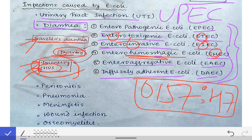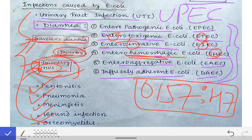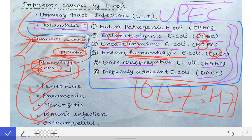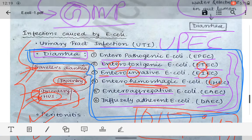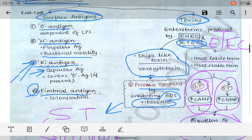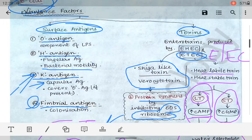E. coli can also cause peritonitis, pneumonia, meningitis — it is a very important cause of meningitis — wound infection, and osteomyelitis. These are all the infections caused by E. coli. However, since we are discussing this topic in the gastrointestinal infection portion, we will concentrate more on the diarrheogenic E. coli — the six pathotypes. That's all for the virulence factors and infections caused by E. coli. Next, we will see the lab diagnosis of E. coli infection.